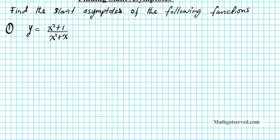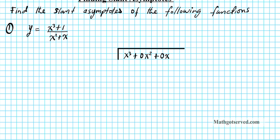In order to find a slant asymptote, all you do is long division — divide the numerator by the denominator, and the polynomial portion of your resulting answer is going to be your slant asymptote. So let's set up our long division bars. The top goes under the division bar, so we write x to the third. There's no second degree term, so we use a placeholder 0x squared. There's no first degree term, so we use another placeholder 0x, plus the constant 1. That's divided by x squared plus x.